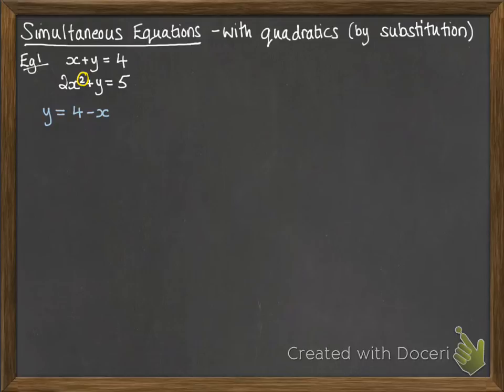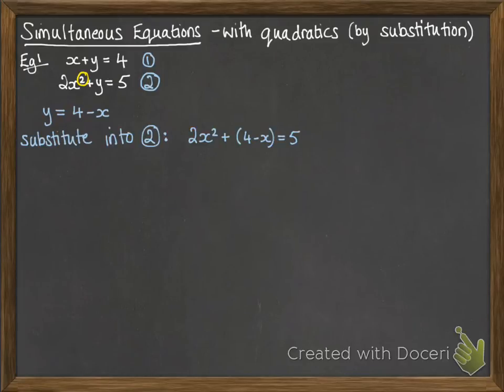First, we'll rearrange that top one, equation number one, into something more useful so we've isolated one of those variables, in this case the y. Then we'll substitute it into equation number two. We've taken out the y in equation two, replaced it with the y from equation one, and now we can solve that equation as a normal quadratic.